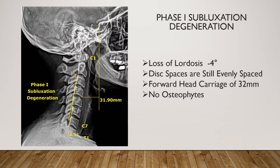In phase one subluxation degeneration, we see a loss of the normal curve. If we were looking at a posterior view, we might see a scoliosis. In this case, the neck has lost that normal forward lordosis of 43 degrees and is actually reversed at a minus 4 degrees. At this point, the disc spaces are still nice and equally spaced out, although we do see quite a bit of forward head carriage measuring almost 32 millimeters — remember, that number should be less than 10 millimeters. If nothing is done to get the head back over the shoulders and begin to restore that lordosis and remove areas of subluxation, it will begin to degenerate and we will move into phase two.